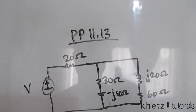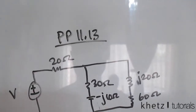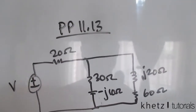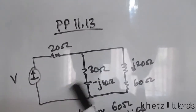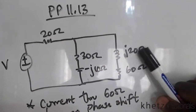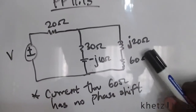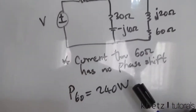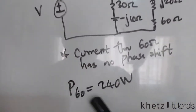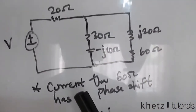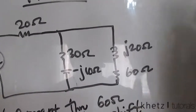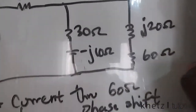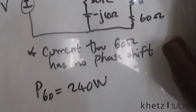Welcome to CATS Tutorials. In this video I'll be covering practice problem 11.13. Given this circuit, we're told that this resistor here absorbs an average power of 240 watts, and the current through that same resistor — the value of the impedance has no phase shift — which means you can quickly find the RMS current.